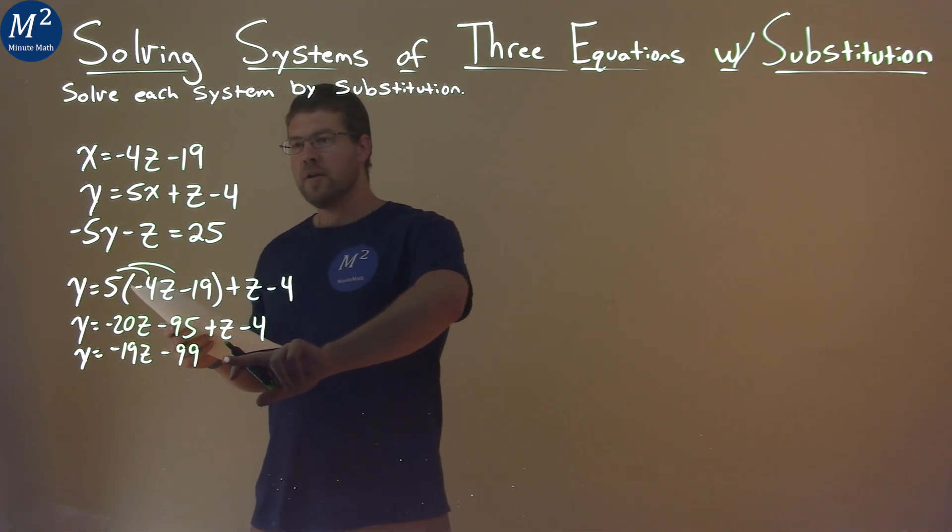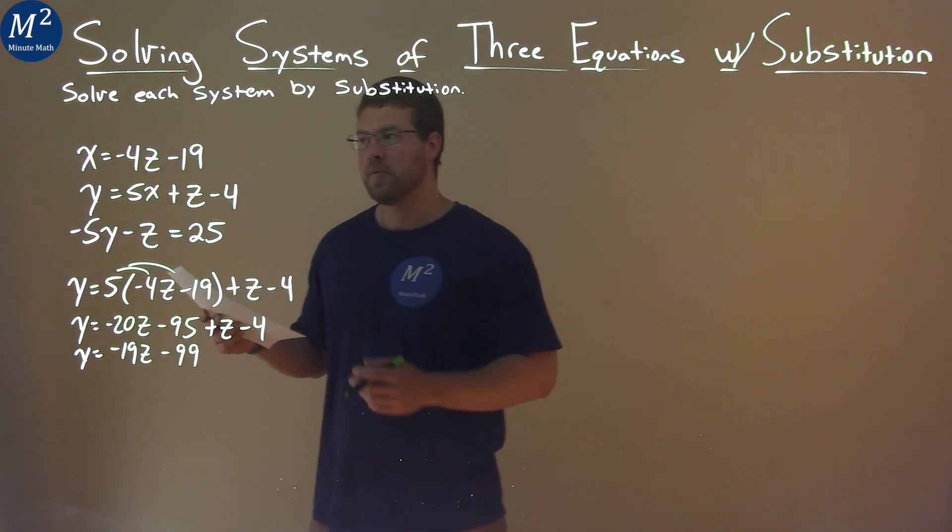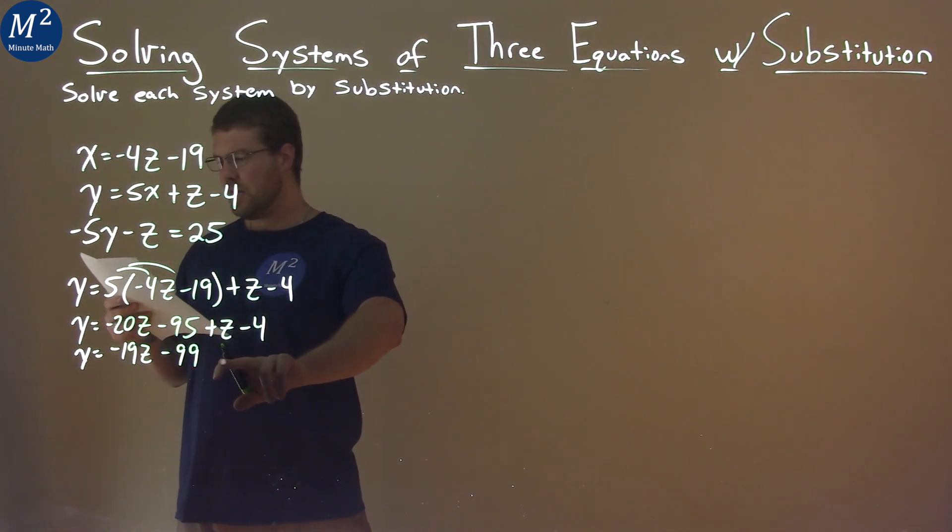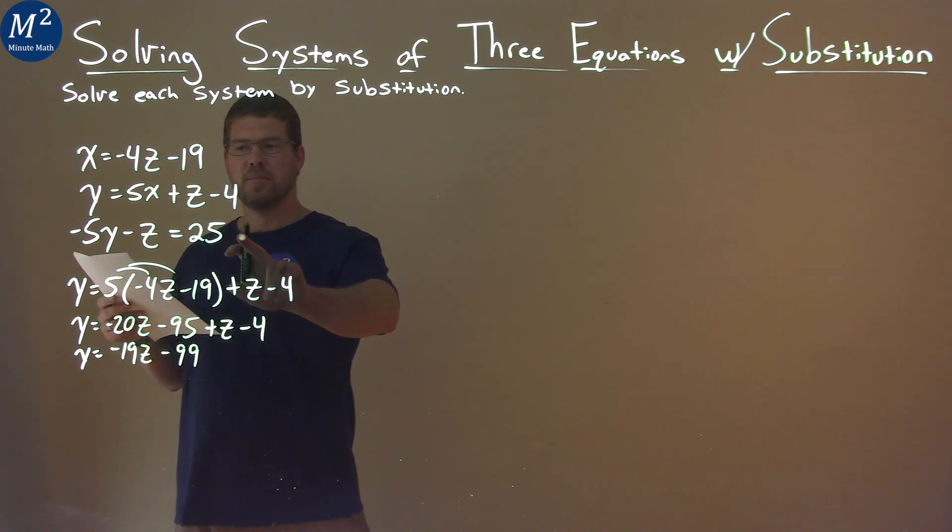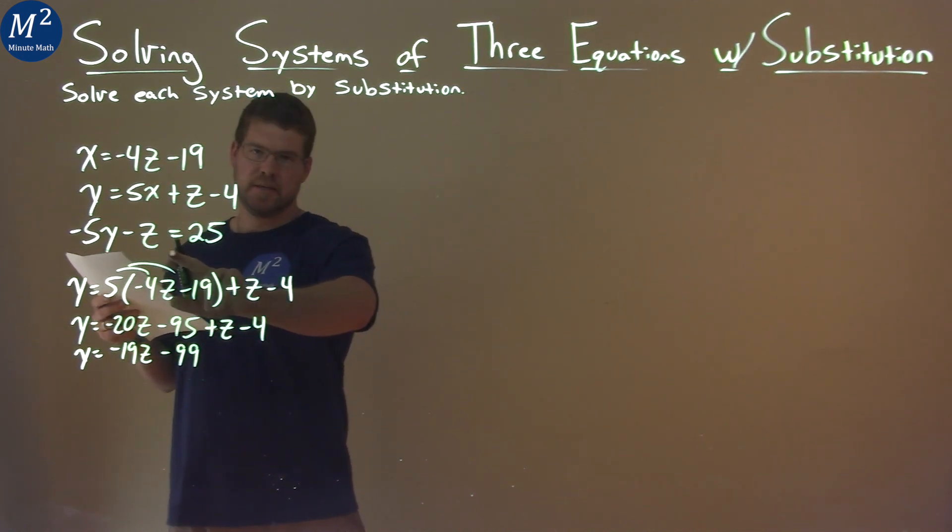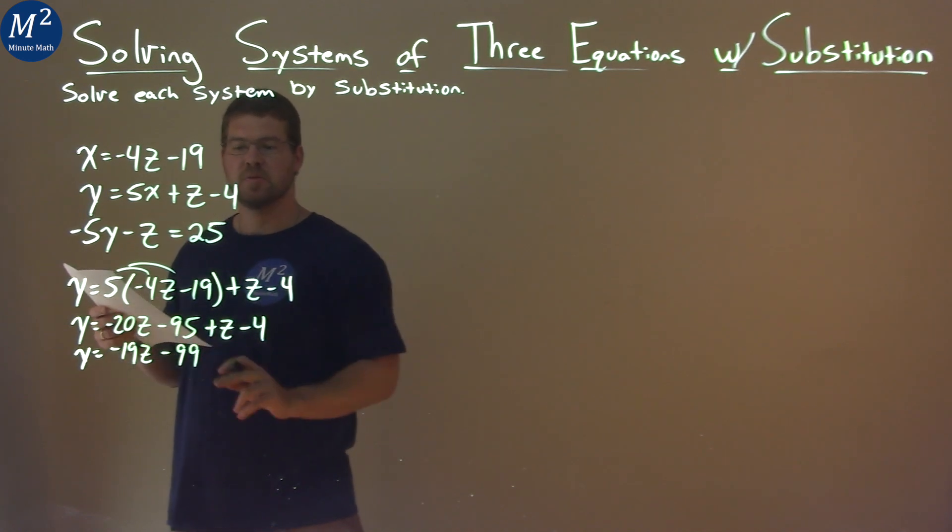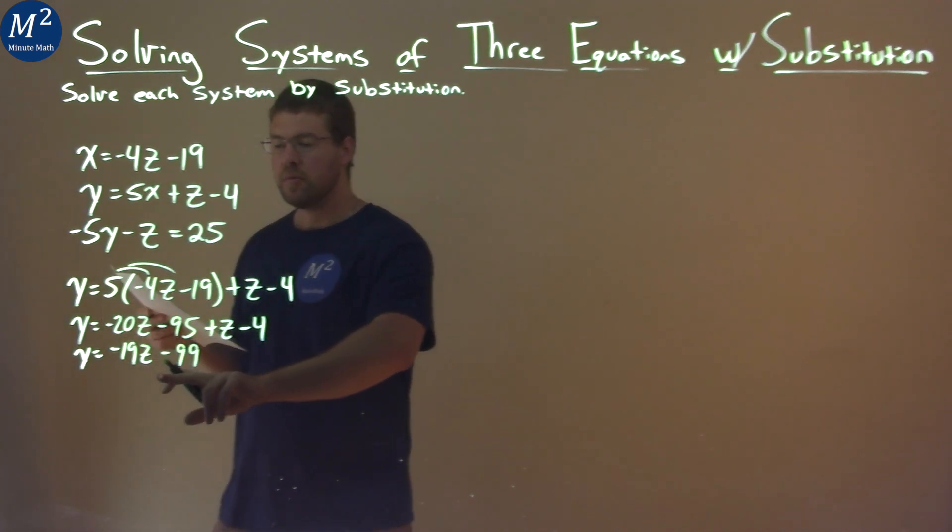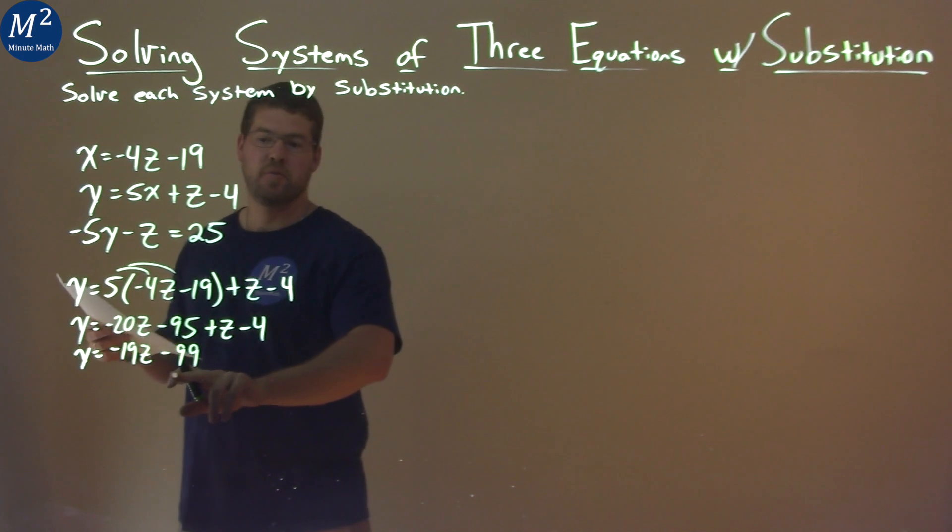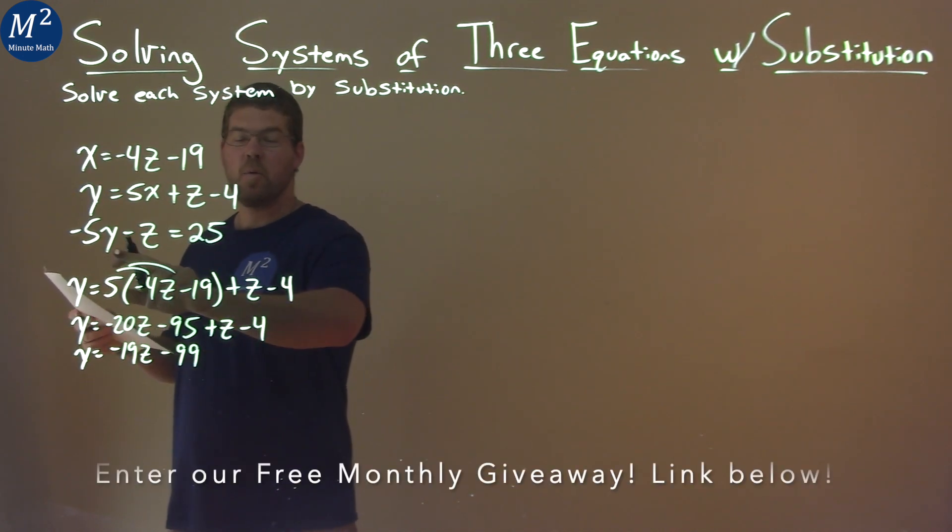What now I want to do is, I want to see if I can get a variable by itself. And we notice here on the third equation, I have y and a z, and that's it. And this equation we found just has a y and a z as well. So what I'm going to do is take this equation we just found and plug it in for that y right here.